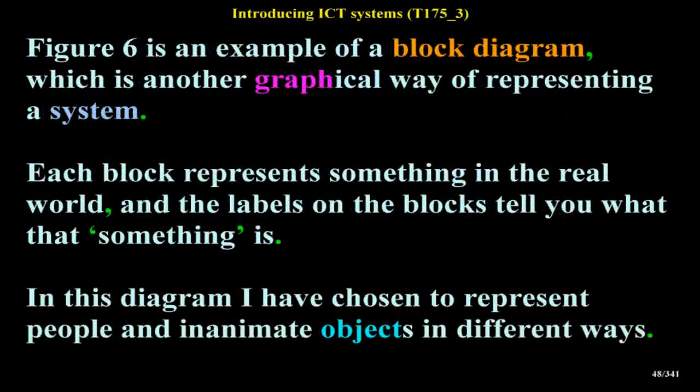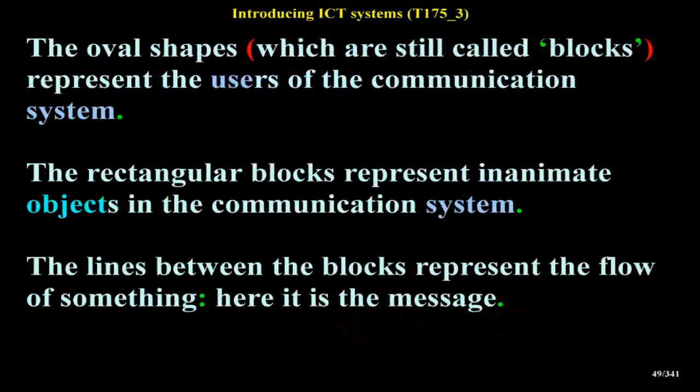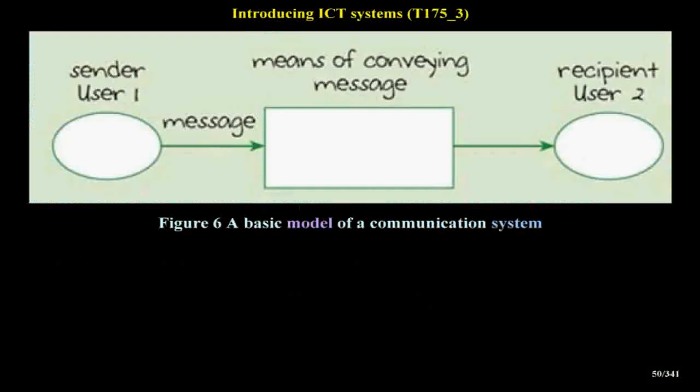Figure 6 is an example of a block diagram, which is another graphical way of representing a system. Each block represents something in the real world, and the labels on the blocks tell you what that something is. The oval shapes represent the users of the communication system, while rectangular blocks represent inanimate objects. The lines between the blocks represent the flow of something — here it is the message.